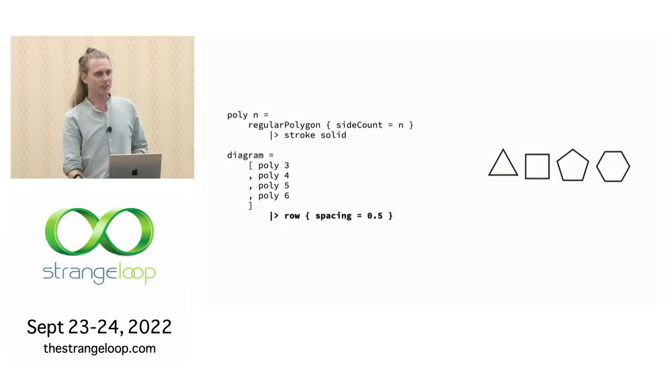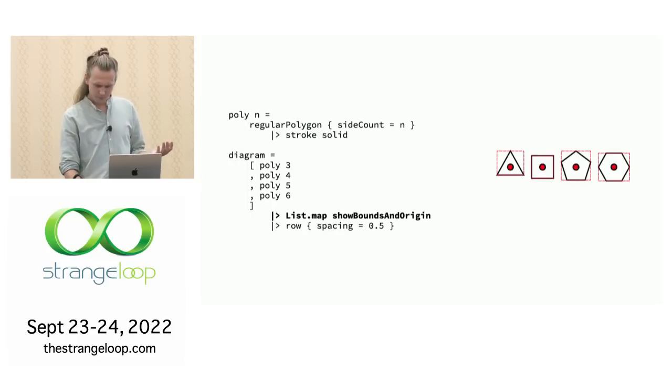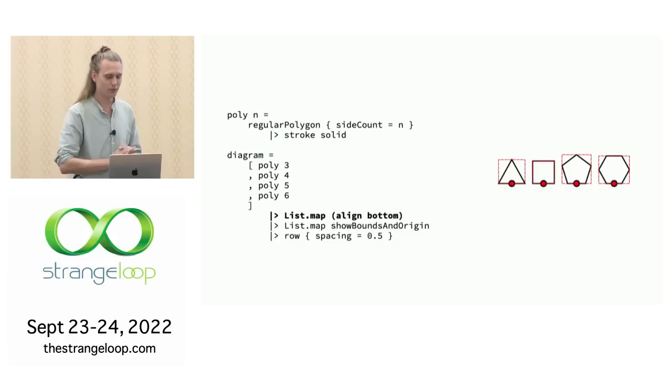But it kind of doesn't look that good. We want them to sort of be sitting on a table that feels more natural. And so there's a function for that, it's called align. And so we align to the bottom. And now that alignment point moves to the bottom, it was at the center, now it's at the bottom, and now they all line up at the bottom. When I use the function row here to put all these in one row, or when I was using stack before, that creates another diagram. If you're familiar with HTML or SVG, you create a bunch of divs, and then you put them in a div. Here, everything is a diagram.